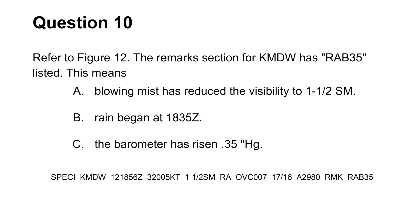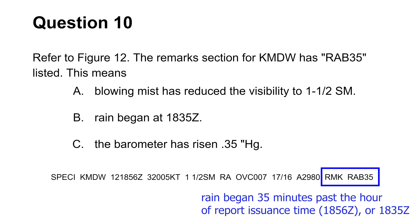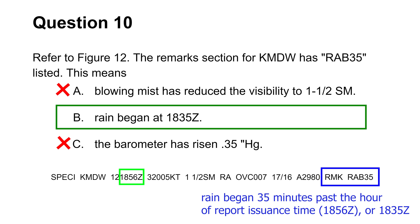The tenth question asks you to give the meaning of RAB35 in the remarks section of a METAR report. RA stands for rain. Remarks in METAR reports typically talk about precipitation and the time when it began. In this case, the letter B stands for begin, while 35 means that the rain began 35 minutes past the hour when the METAR report was issued. Because the report was issued at 1856 Zulu time, this means the rain began at 1835 Zulu time. This makes choice B the answer.